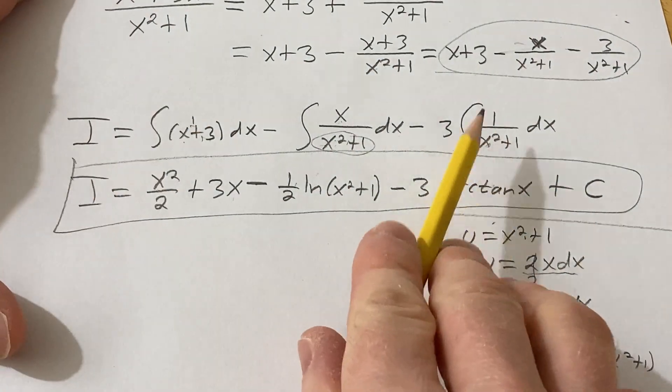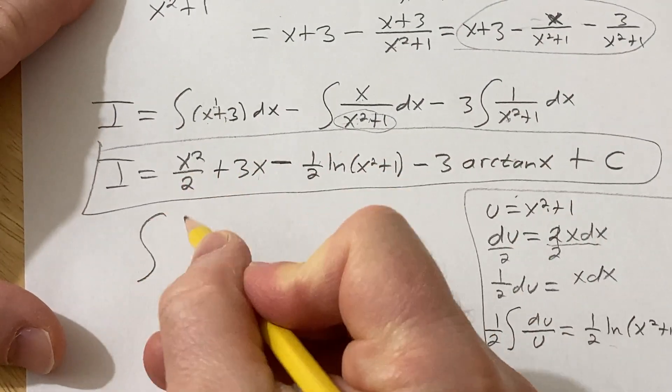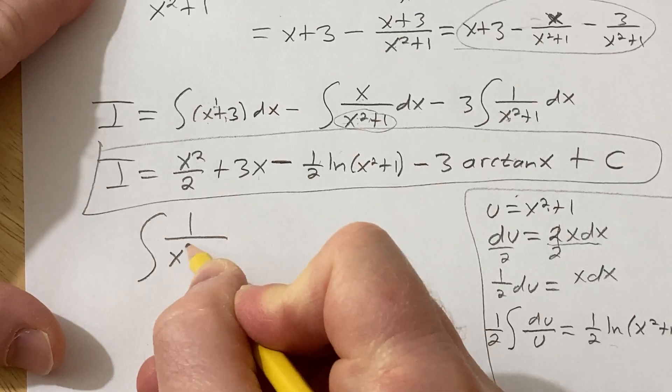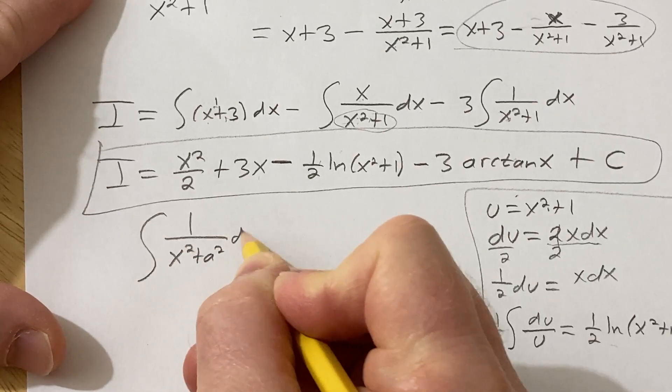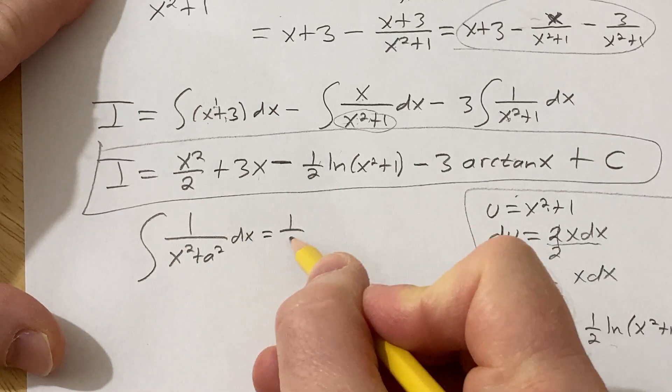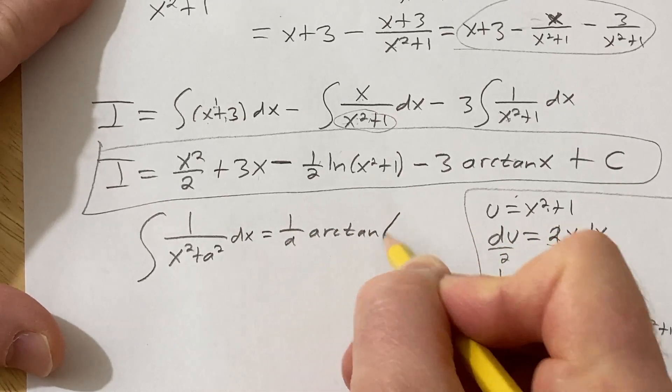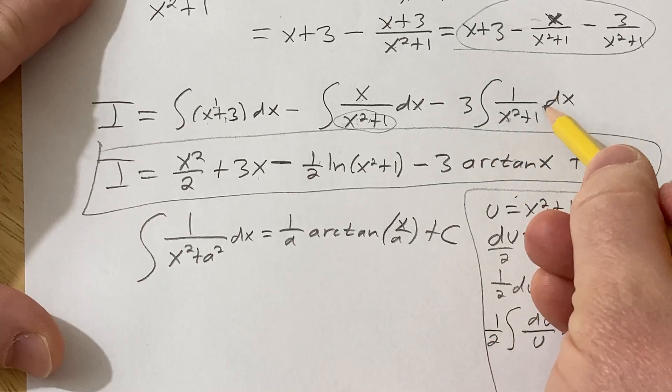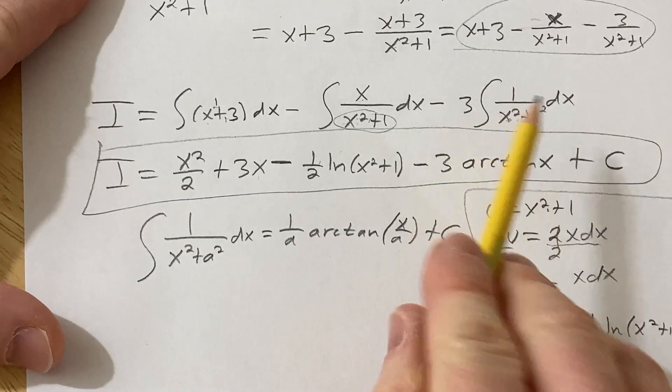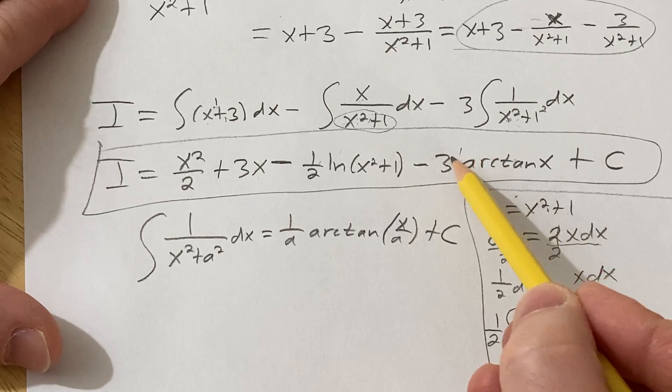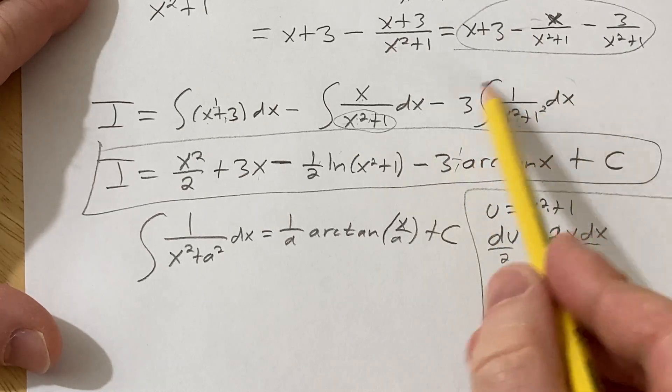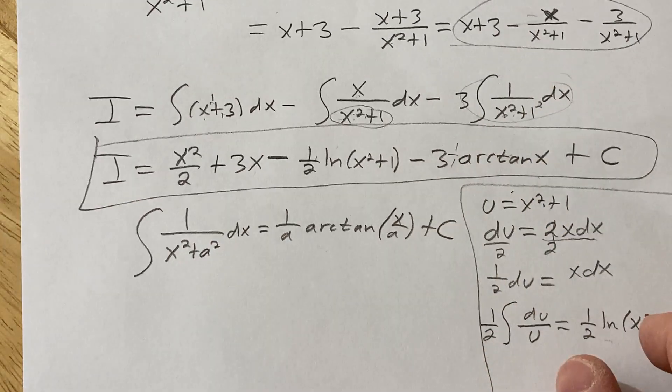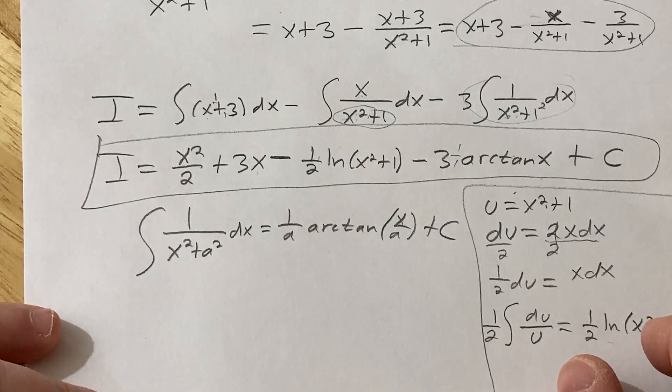If you're not familiar with the arctan formula, let me just refresh your memory. If you have 1 over x squared plus a squared dx, that's going to be 1 over a arctangent of x over a plus a constant of integration. So in this case, your a is 1. So it's just 1 over 1 and then x over 1. So this is like the easiest case.